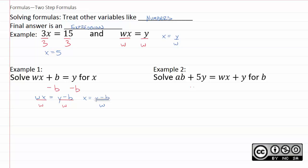The easiest thing to do is subtract 5y. Remember this is technically 1y. Think invisible 1. And so we'll now have ab is equal to wx, 1y minus 5y is negative 4y. Those are like terms because they both have y in them.